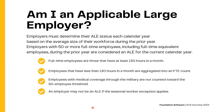Full-time employees are those with at least 130 hours in a month. The IRS states that an employee with 30 hours in a week is considered full-time, which they translate to 130 hours in a month. Employees with less than 130 hours in a month are aggregated into a full-time equivalent count. Also be aware that employees with medical coverage through the military are not counted toward the 50-employee threshold, and an employer may not be an ALE if the seasonal worker exemption applies.